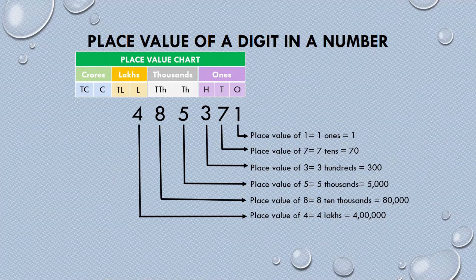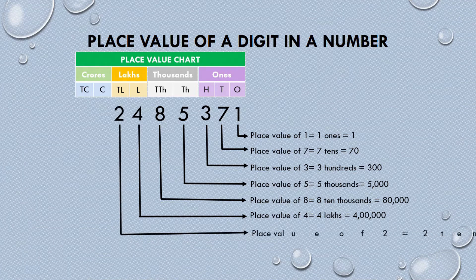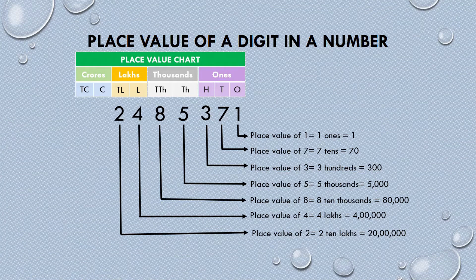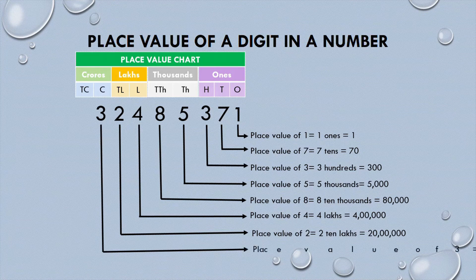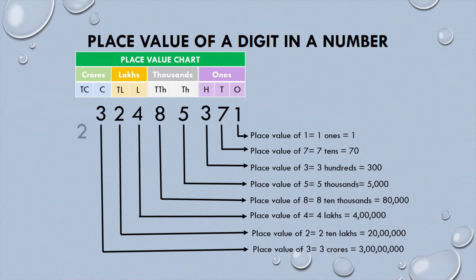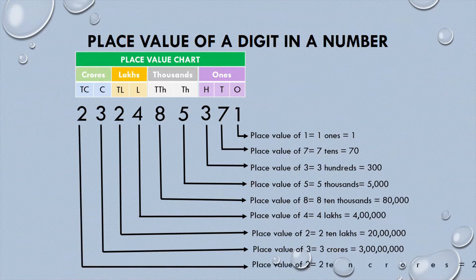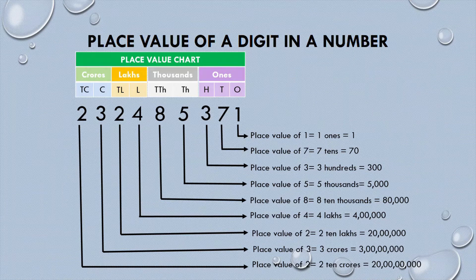The place value of 4 is four lakhs, which is 4,00,000. The place value of 2 is two ten lakhs, which is 20,00,000. The place value of 3 is three crores, which is 3,00,00,000. The place value of 2 is two ten crores, which is 20,00,00,000.